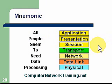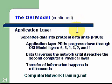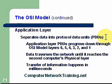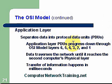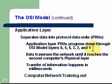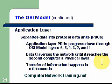The application layer, our top layer, separates data into protocol data units, or PDUs. This is where we first start taking our data and breaking it up. These application layer PDUs progress down through the OSI model layers — from layer seven down to layer one. The data traverses the network until it reaches the second computer's physical layer, then comes back up through the seven layers until it gets back to the user. Transfer of information happens in milliseconds — it's lightning fast, almost instantaneous.